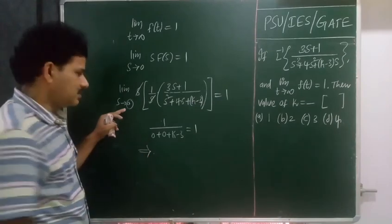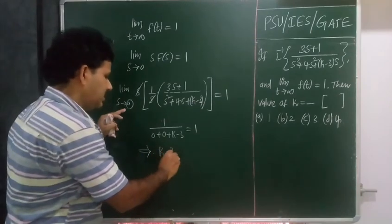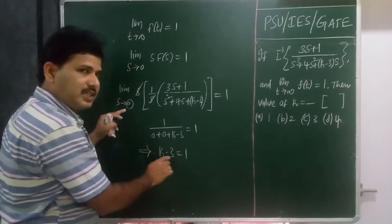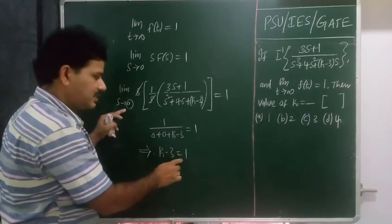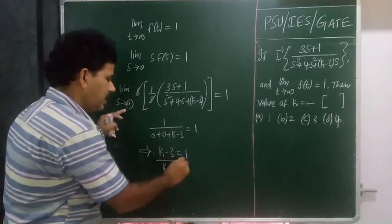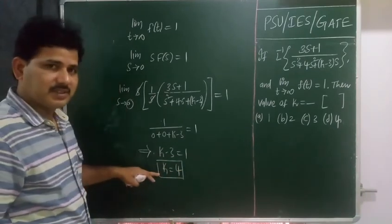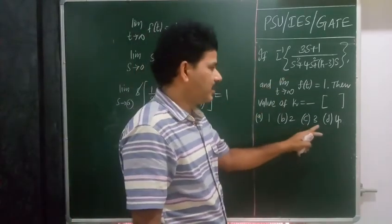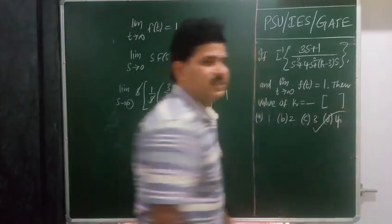It gives us k minus 3 equals 1. We can bring negative 3 to the right hand side: 1 plus 3 becomes 4. Hence k equals 4 is the correct answer to this particular question. Hence our correct option will be D.